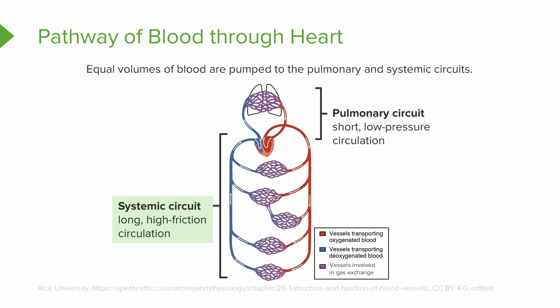The systemic circuit, however, is much longer as it has to start at the heart and pump throughout the whole entire body. It is also a high-friction circulation as it's going to encounter a lot more resistance than our pulmonary circuit, which is shorter.